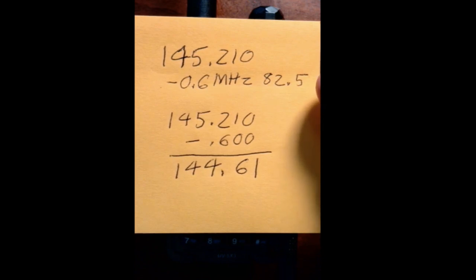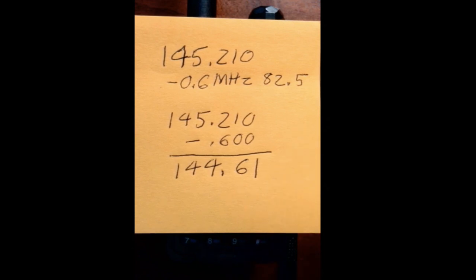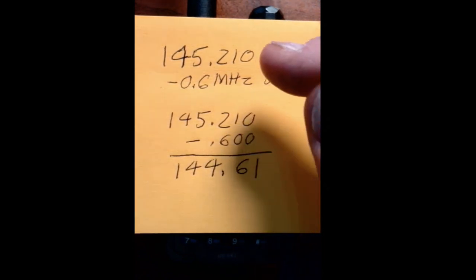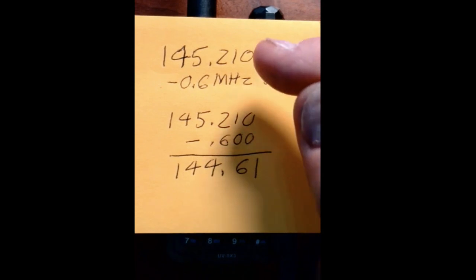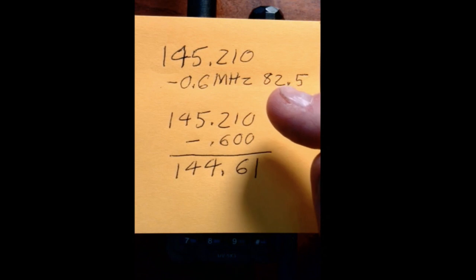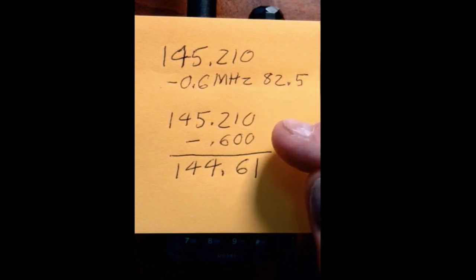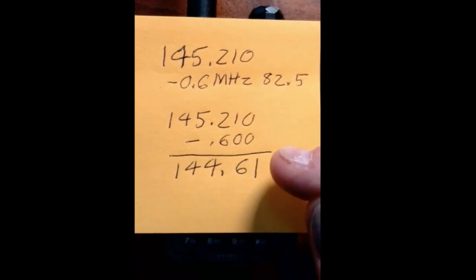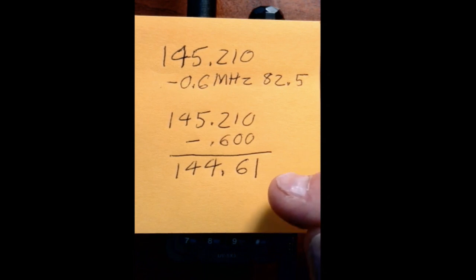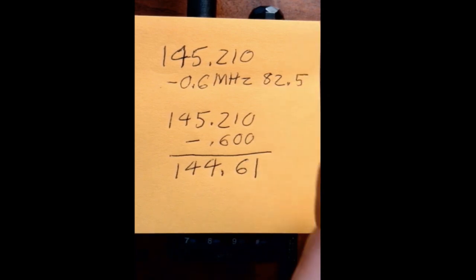This tone will be transmitted along with the frequency I transmit. In this particular radio, we have to calculate the exact transmit frequency — we don't just put in the offset to save it in memory. If the offset is minus 0.6 MHz from 145.210, then 145.210 minus 0.6 gives us 144.610. We're going to enter in both of those and the tone, and then show how it works.